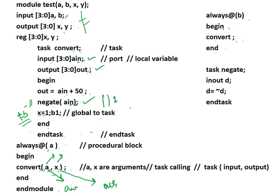This task is a subroutine. Reusability is clearly demonstrated: the task 'convert' is written only once but called multiple times — twice from different procedural blocks. You can call a task as many times as needed. This covers how tasks work, task calling, local and global variables, delays, and accessing global variables.